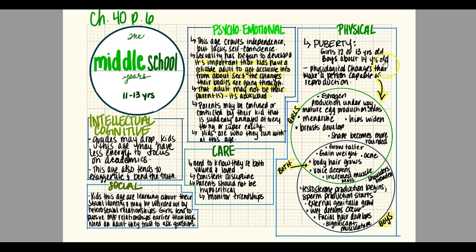For physical development, puberty happens at this stage. Puberty for girls is about twelve or thirteen years old; for boys it happens a little later around fourteen. The physiological changes that make a person capable of reproduction occur during puberty. For both boys and girls: they grow taller, gain weight, may develop acne, body hair starts growing, and voices deepen, with increased muscle mass. For girls specifically: estrogen production begins, mature eggs start producing, first period arrives, hips widen, breasts develop, and the girl's shape becomes more rounded. For boys: shoulders broaden, testosterone production begins, sperm production starts, external genitalia grow, they may have wet dreams, and facial hair starts to grow.